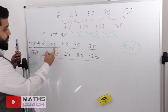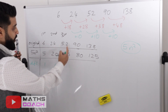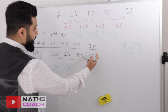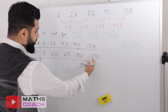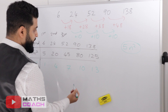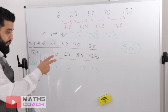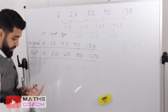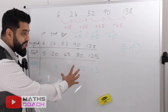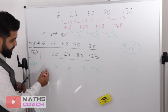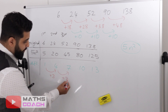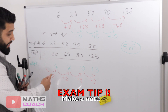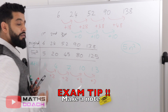Find the differences: 6 minus 5 is 1, 24 minus 20 is 4, 52 minus 45 is 7, 90 minus 80 is 10, 138 minus 125 is 13. We have another sequence. Treating it as a linear sequence, the difference between each term is plus 3 each time.